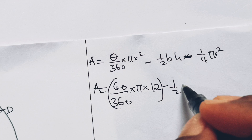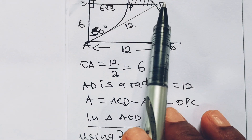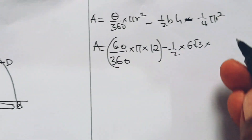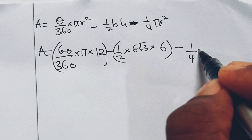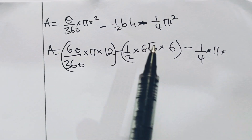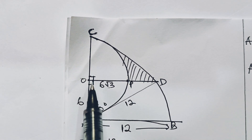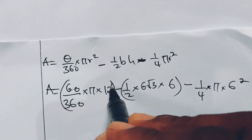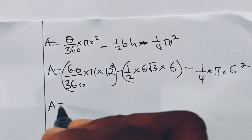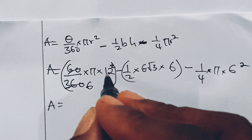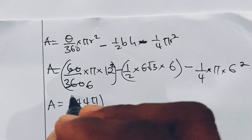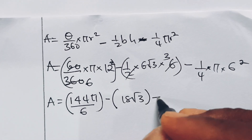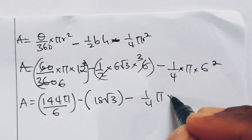Minus one-half times the base of triangle AOD, which is 6√3, multiplied by the height of 6. Minus one-quarter times pi times the radius of the quadrant squared — the quadrant radius OE is 6 — so minus one-quarter pi times 6 squared. Now 60 over 360 simplifies to one-sixth, giving 144 pi over 6, which equals 24 pi.